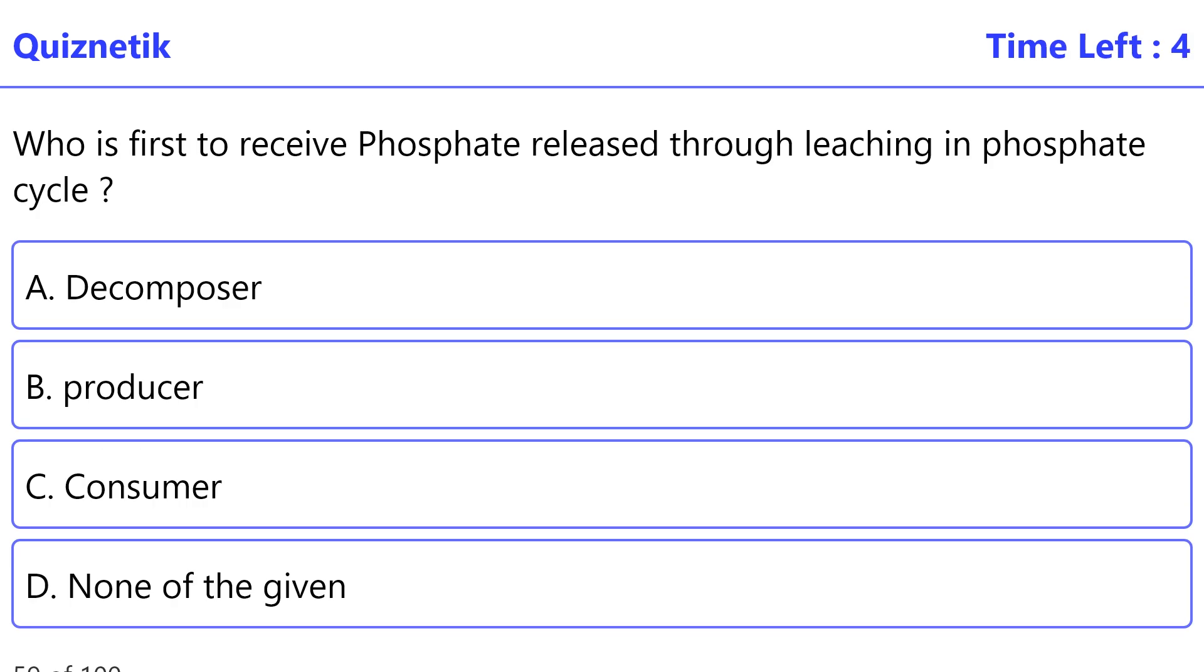Who is first to receive phosphate released through leaching in phosphate cycle? The correct option is B, the producer.